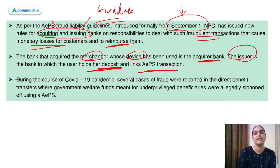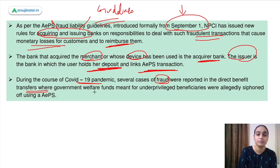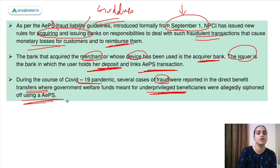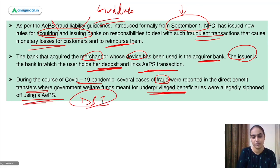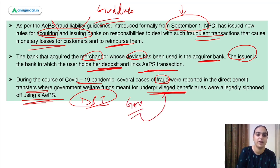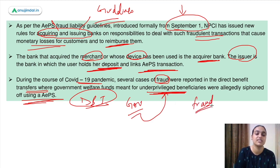During the COVID-19 pandemic, several fraud cases were reported where direct benefit transfers from the government, meant for unprivileged beneficiaries, were siphoned off using AEPS. The government's transfers to these beneficiaries' Aadhaar-enabled accounts were diverted through fraudulent means, which is why NPCI issued these new guidelines.